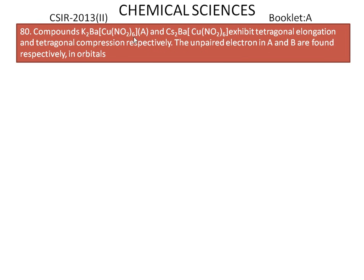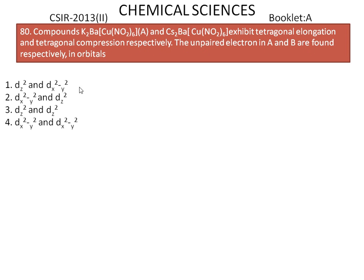Compounds A and B exhibit tetragonal elongation and tetragonal compression respectively. The unpaired electron in A and B are found respectively in orbitals — the options of the EG orbitals are shown here.